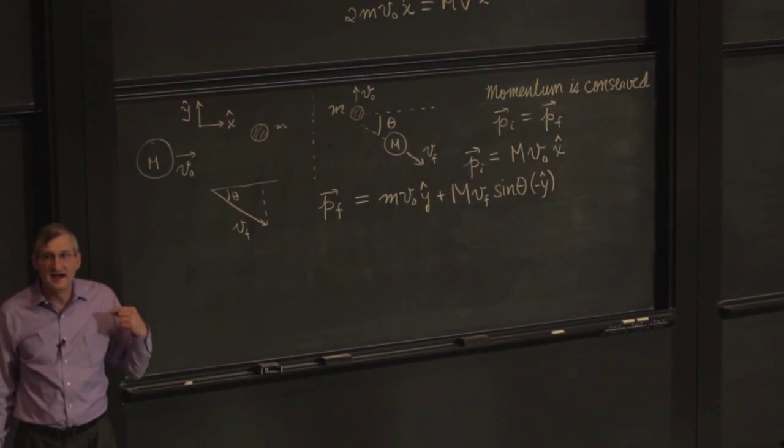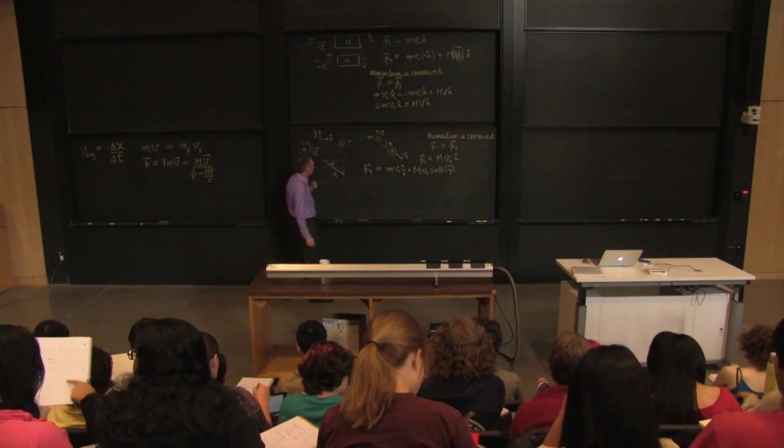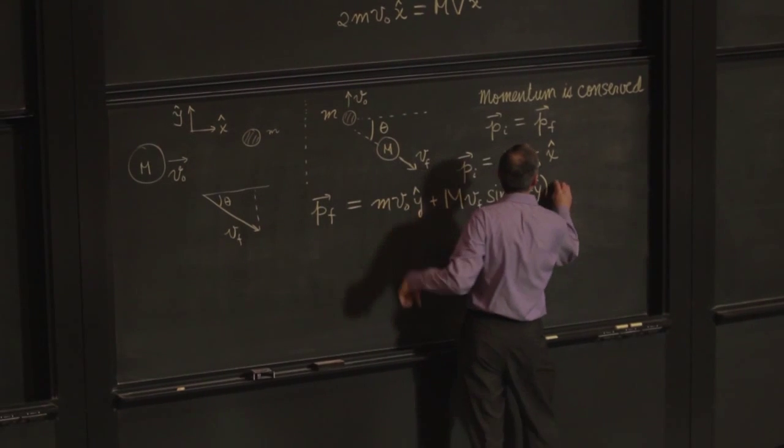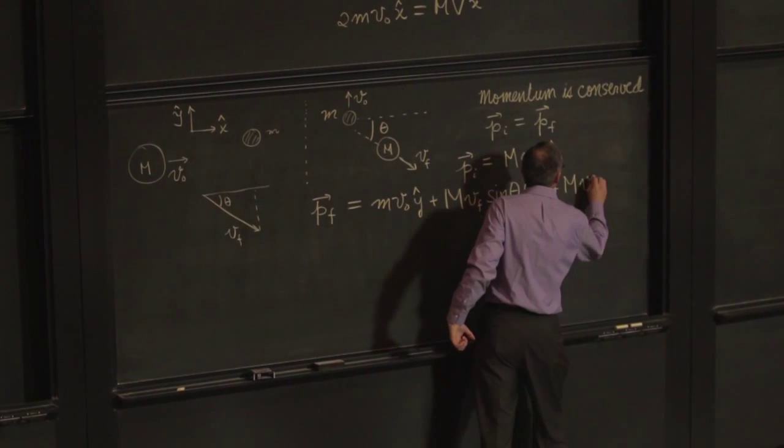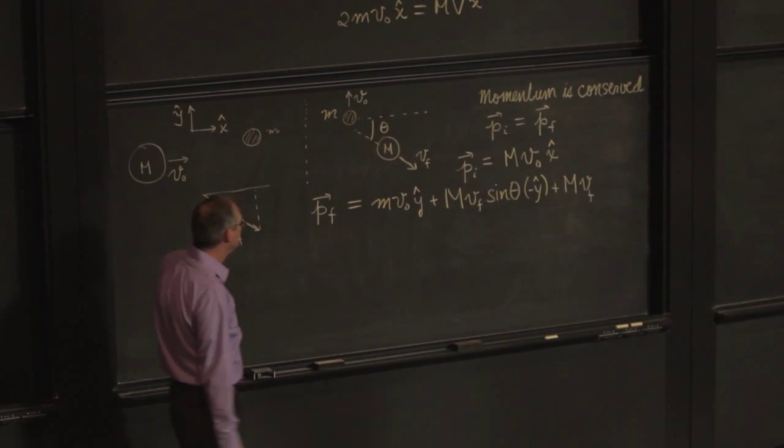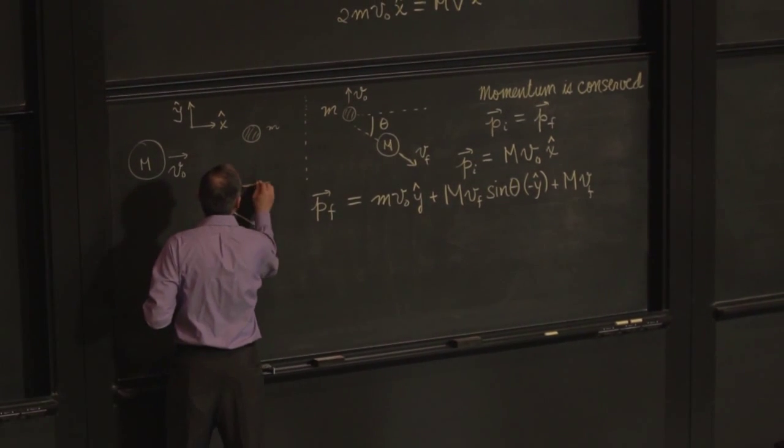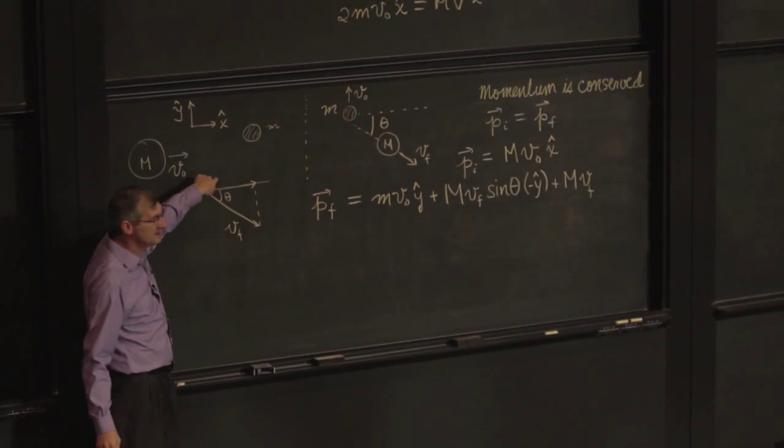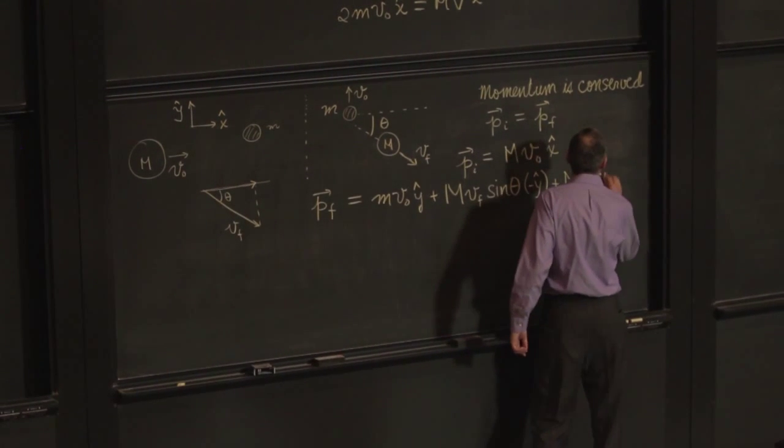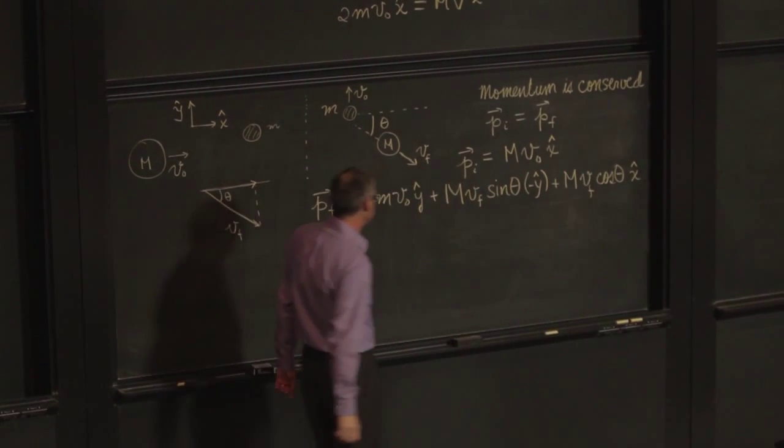And that's in the negative y direction. Am I done? No. What's left? The x component. So that's plus M V final. And now I need this component. That's the adjacent. So that's cosine theta in the x.